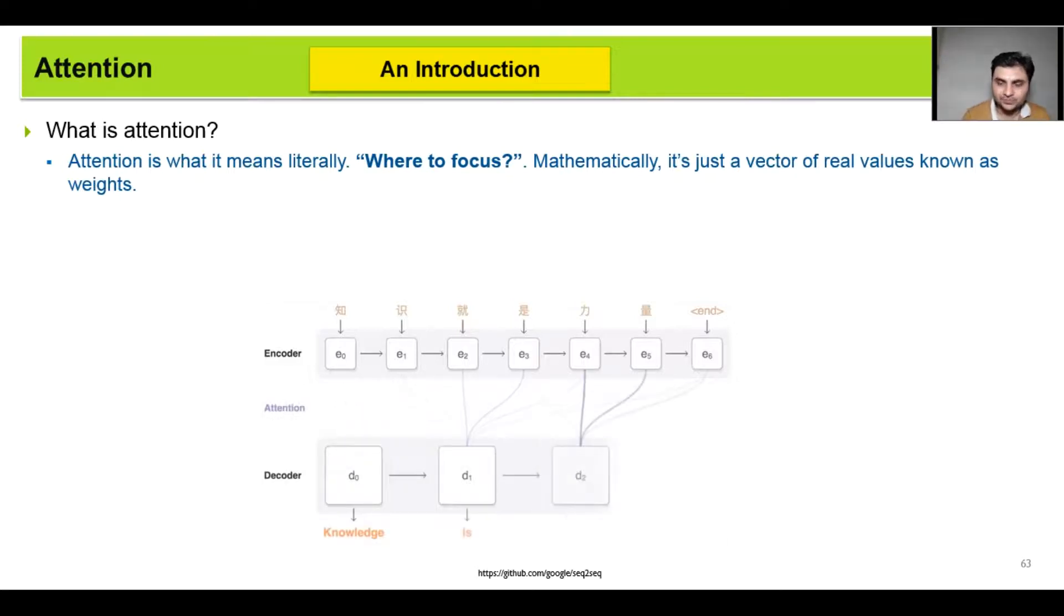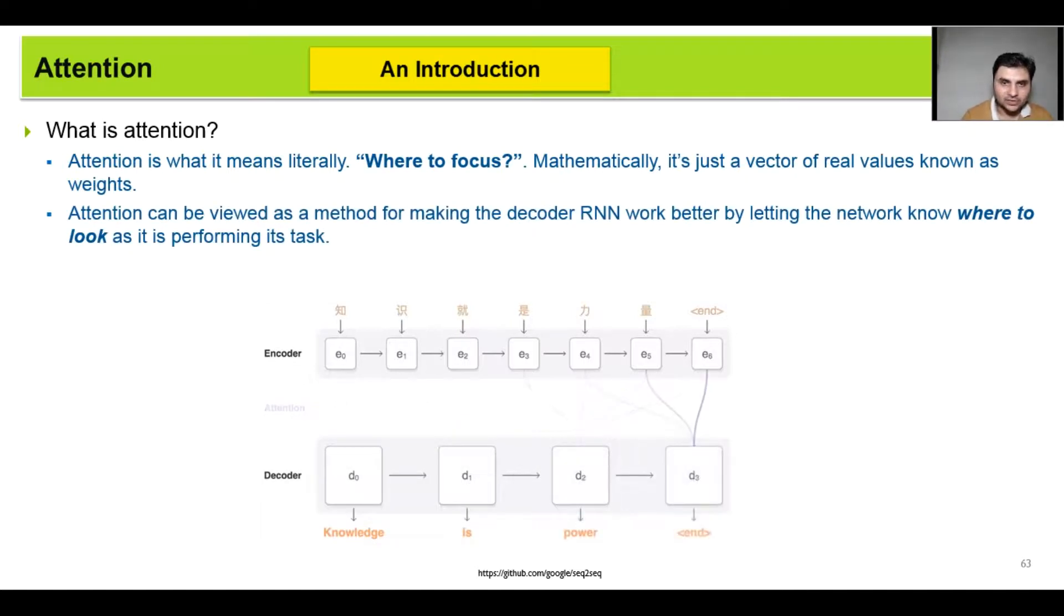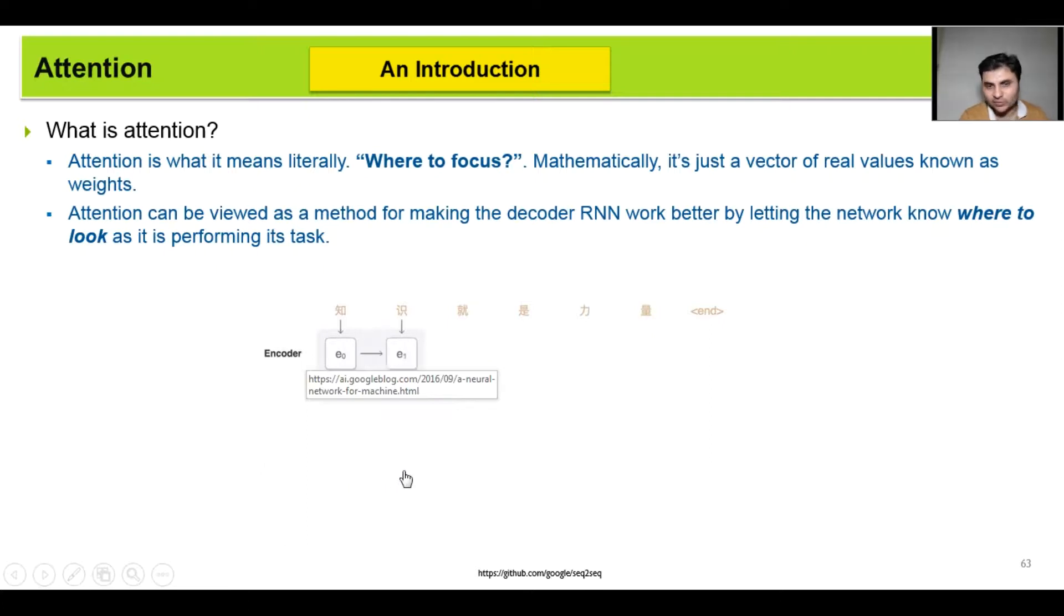We'll see this in great detail. We can view it as a method for the decoder RNN to perform better by letting it know where to focus when it is translating, whenever it is performing its task. So we have the encoder here, we have a decoder here. When the decoder is performing its task, it can focus on the important words of the encoder.